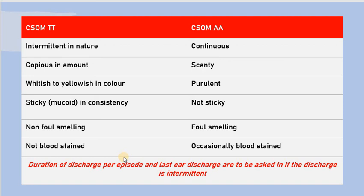The discharge in CSOM-TT is not bloodstained. It is occasionally bloodstained when there are polyps, but that is rare. But in case of CSOM aticoantral type, the discharge is occasionally bloodstained because of the presence of granulation tissue and cholesteatoma. Granulation tissues are the end result of the healing process — they are red and pinkish, so they might bleed, leading to bloodstained discharge.